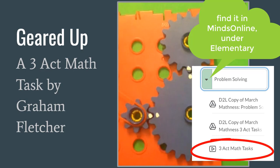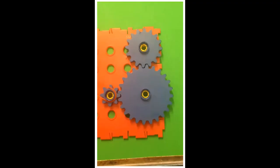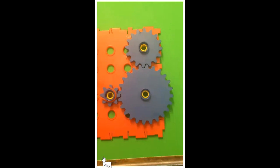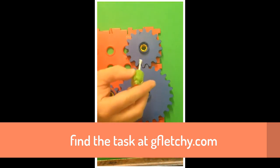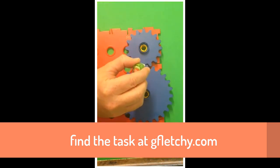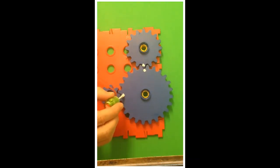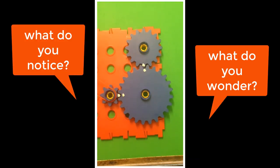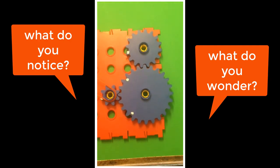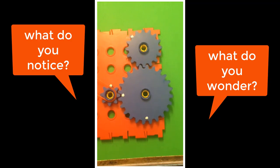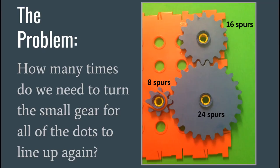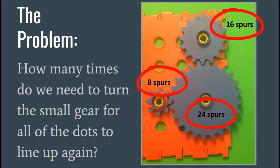I just want to remind you of the problem that students are going to be solving here. Students — in this case the participants in a workshop — were shown this video by Graham Fletcher as act one of his three-act math task called Geared Up. They were asked to notice and wonder what was happening in the video. We agreed on this problem: how many times do we need to turn that small gear for all the dots to line up again? And this is all the information that was given to students.